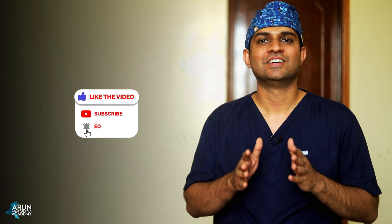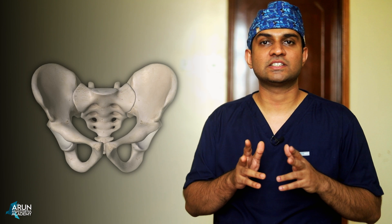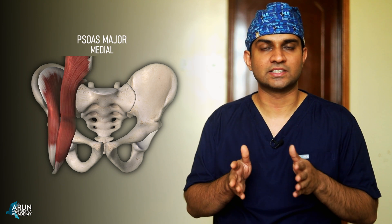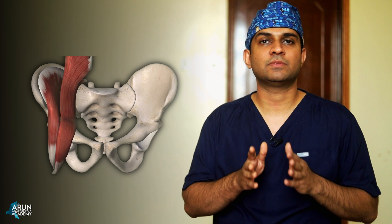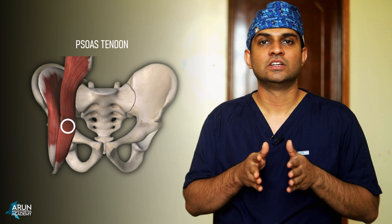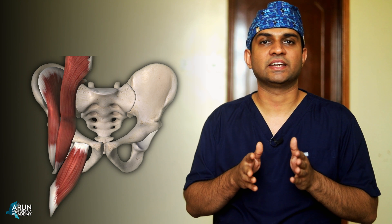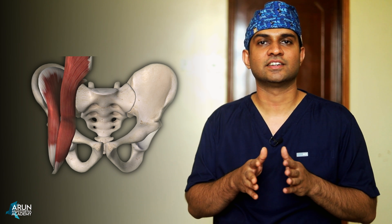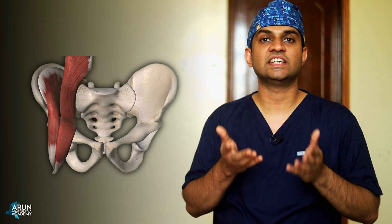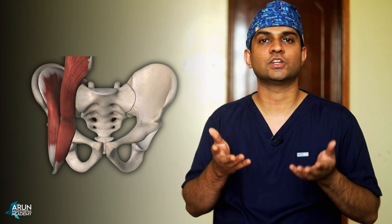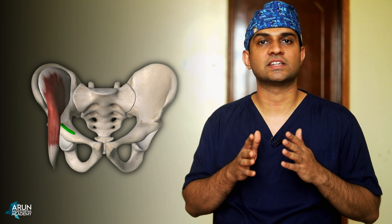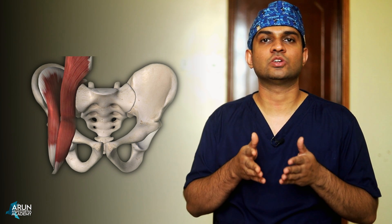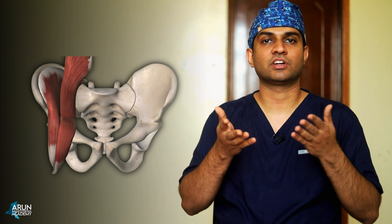Two major muscles to identify are the iliacus muscle on the lateral side and the psoas major muscle on the medial side. In close attachment to the superior pubic ramus and iliopectineal eminence, we have the psoas tendon. More medially is the pectineus muscle, which is not of much significance. The target area — where the articular branches of the femoral nerve, obturator nerve, and accessory obturator nerve are found — is between the psoas tendon and the iliopectineal eminence, and local anesthetic is deposited in this same plane.